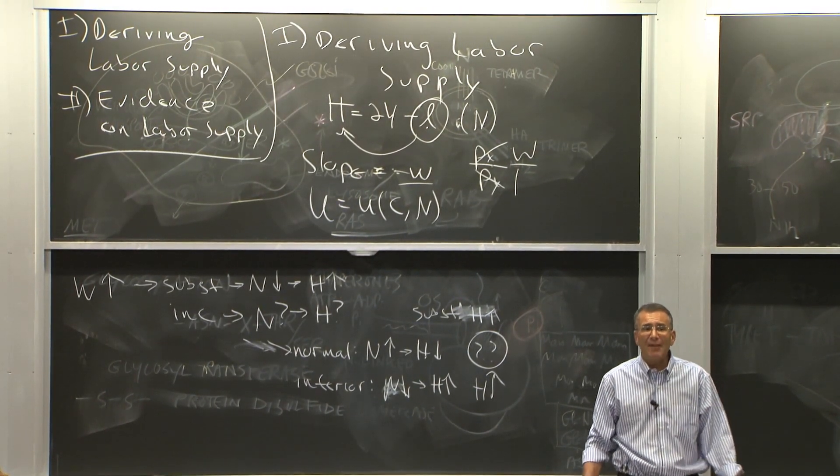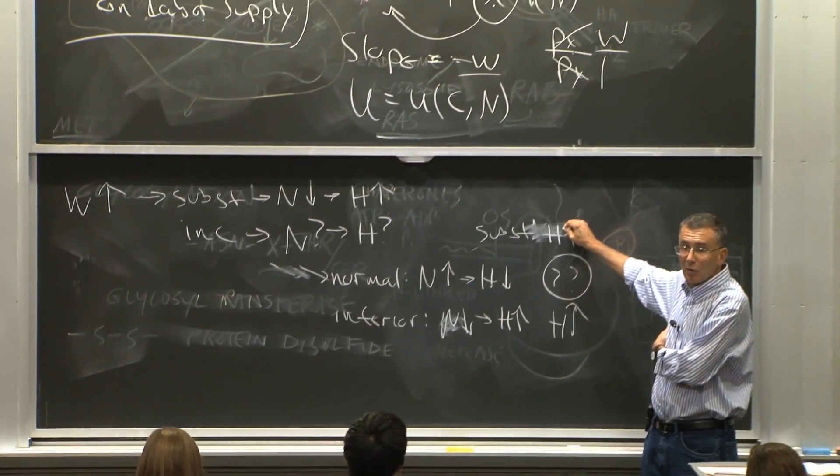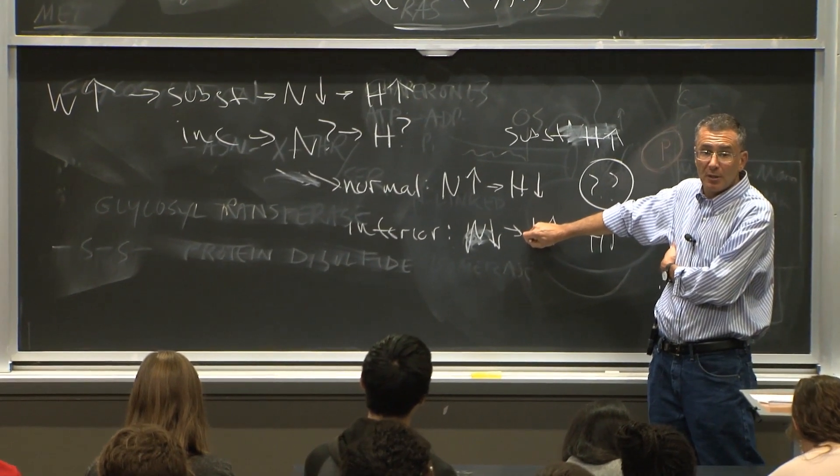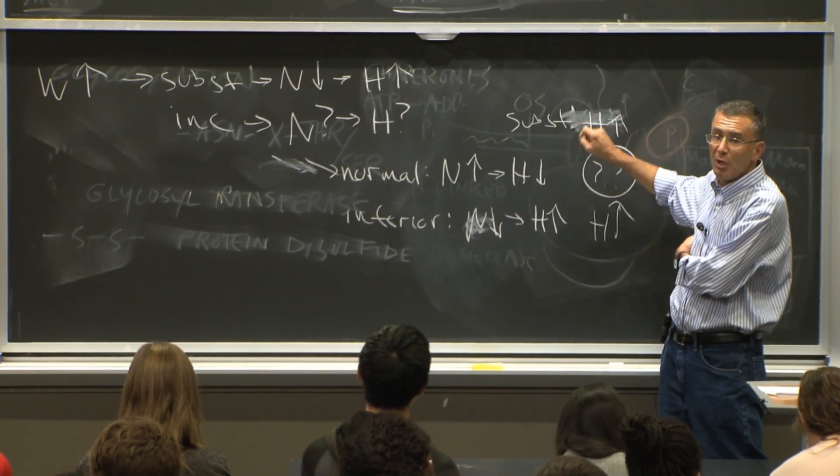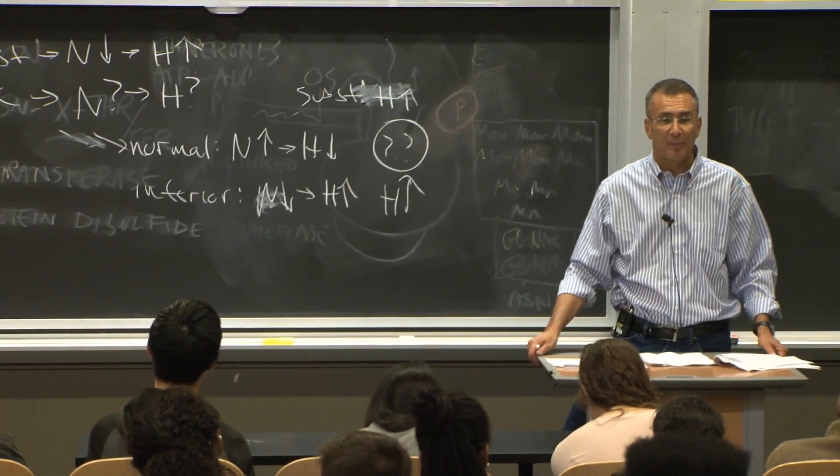So, the bottom line is, if substitution effects dominate, or if leisure is an inferior good, if either substitution effects dominate and leisure is a normal good, or if leisure is an inferior good, then you'll get an upward sloping labor supply curve.